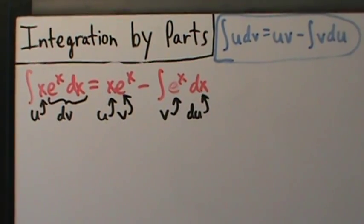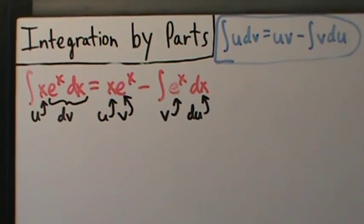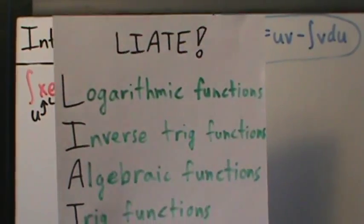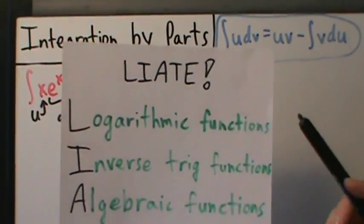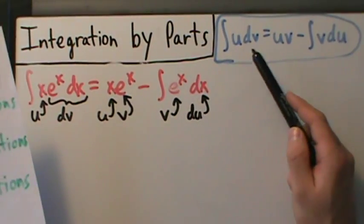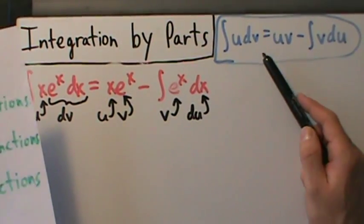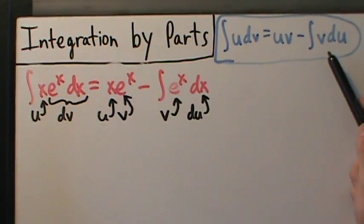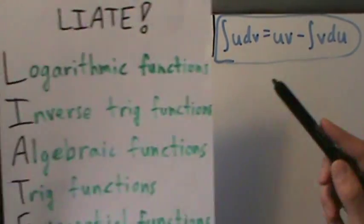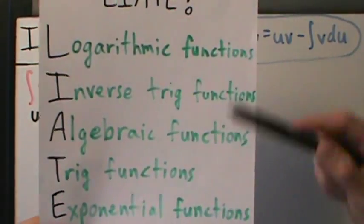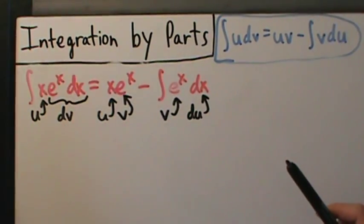All right, so in the last video, we did example one with integration by parts, and we talked about this rule for choosing u. So remember, when you do integration by parts, the integral of u dv equals uv minus the integral of v du, and you want to choose u. So go down this list and choose u to be the first thing that appears. We talked about that in detail in the previous video.